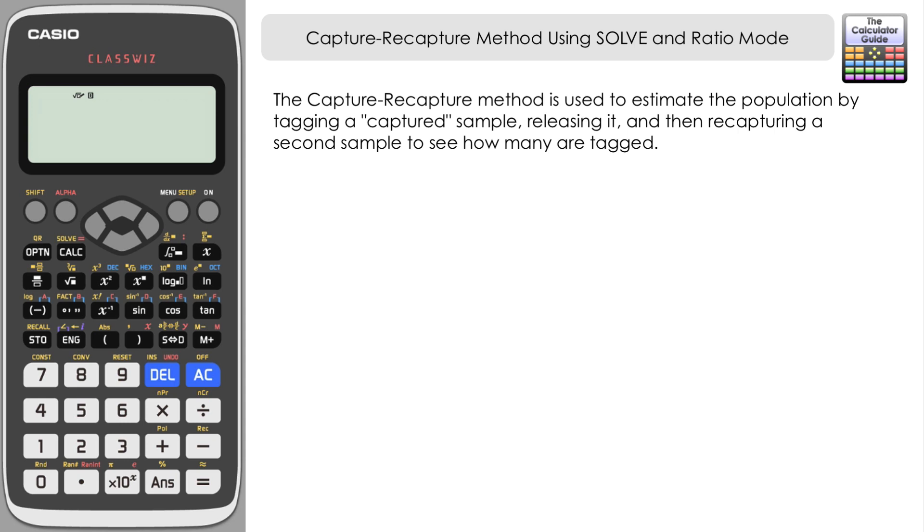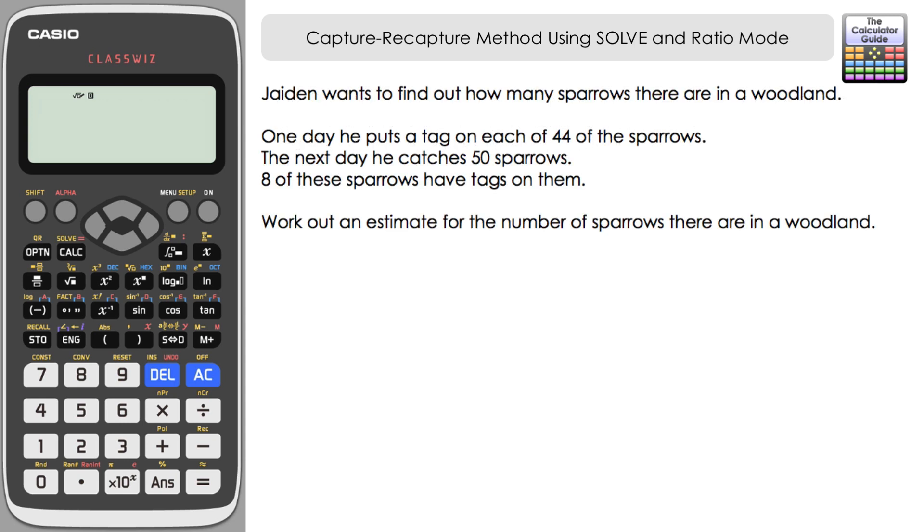Let's have a look at this question. Jaden wants to find out how many sparrows there are in a woodland. One day he puts a tag on each of 44 of the sparrows, so he's essentially captured 44 of the sparrows and put a tag on them so that he can track where they're going. The very next day he catches 50 sparrows, and of those 50, 8 of these sparrows have tags on them. What we need to do is to work out an estimate for the number of sparrows that there are in that woodland area.